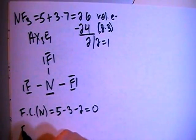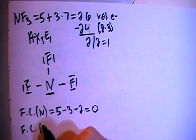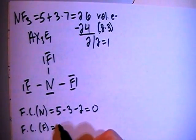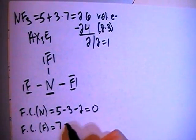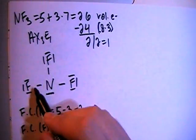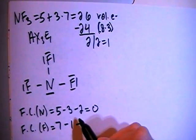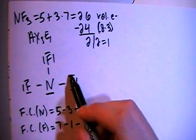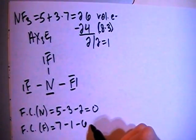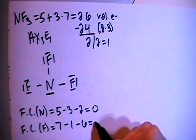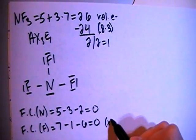And then the formal charge on each of the fluorines is going to be the 7 valence brought in minus the single bond for each fluorine minus 6, 2, 4, 6 non-bonding electrons on each fluorine for a formal charge of 0 as well, times that by 3,